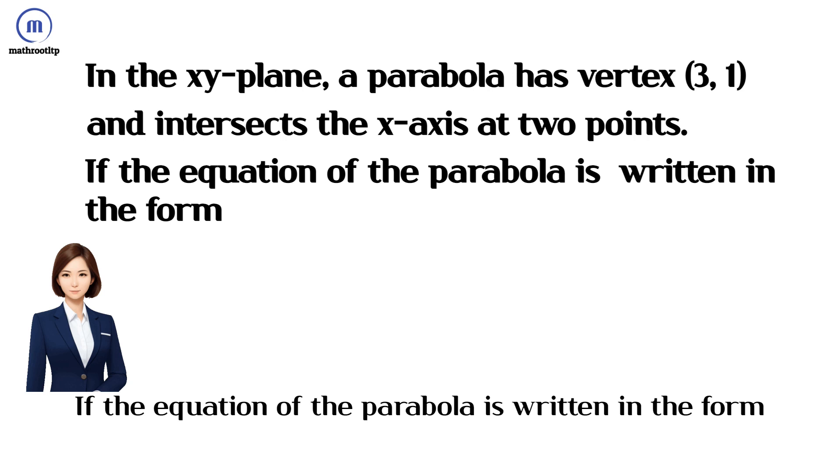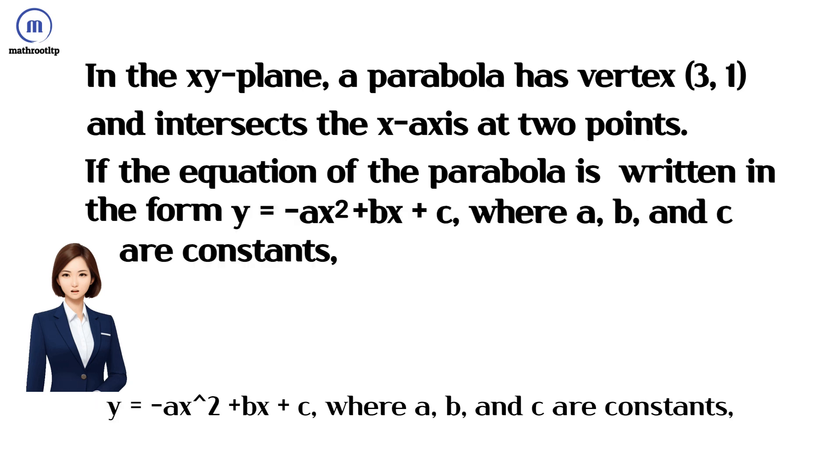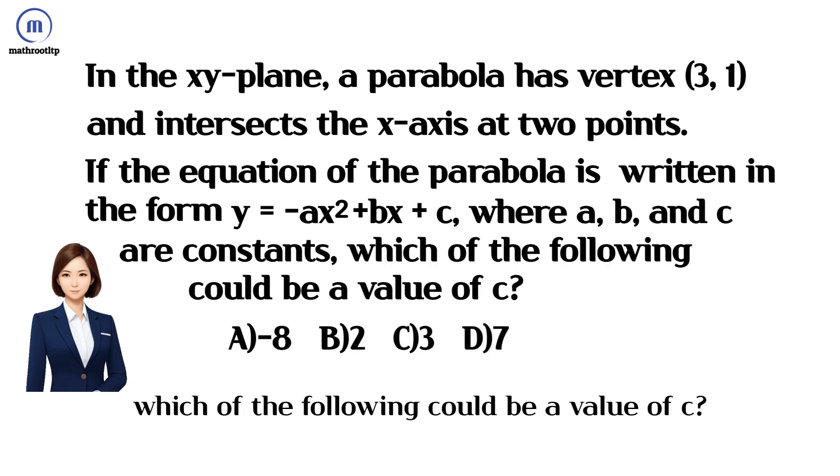If the equation of the parabola is written in the form y equals negative ax squared plus bx plus c, where a, b, and c are constants, which of the following could be a value of c?